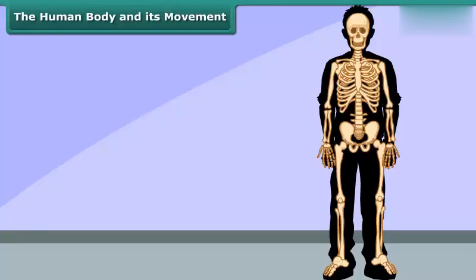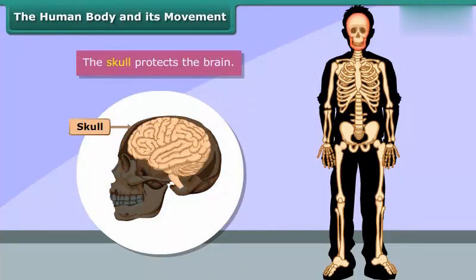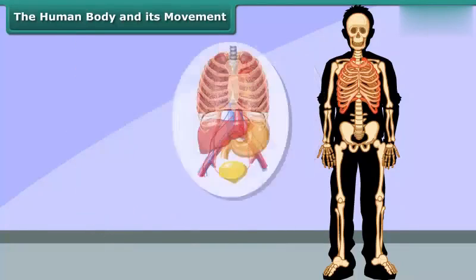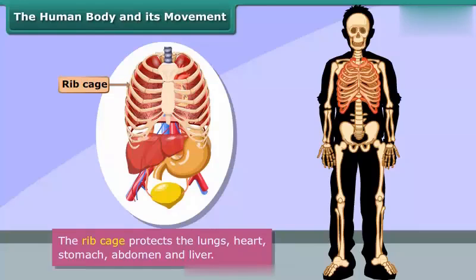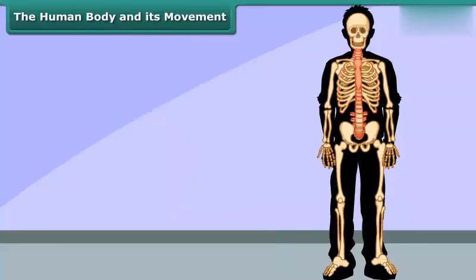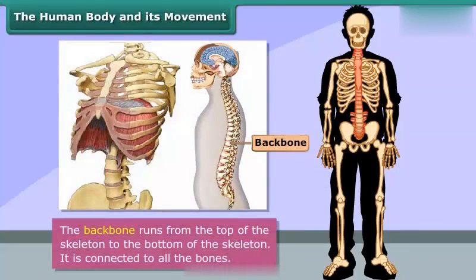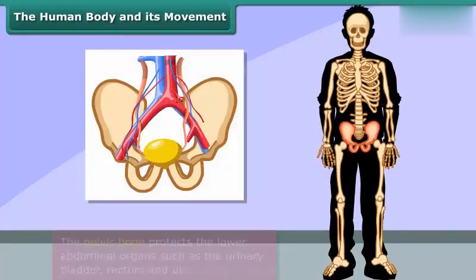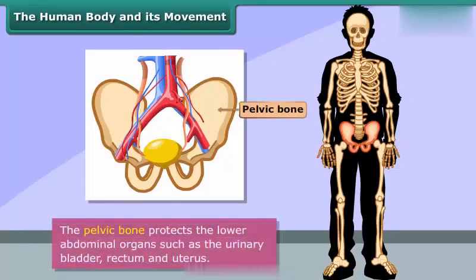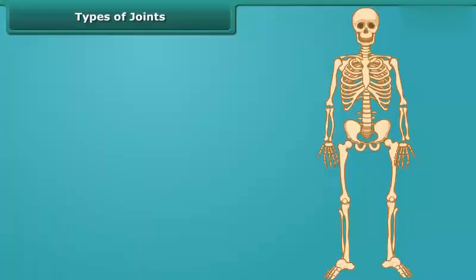Most of the bones protect our organs — the skull protects the brain, while the rib cage protects the lungs, heart, stomach, abdomen, and liver. The backbone runs from the top of the skeleton to the bottom and is connected to all the bones. The pelvic bone protects the lower abdominal organs such as the urinary bladder, rectum, and uterus.